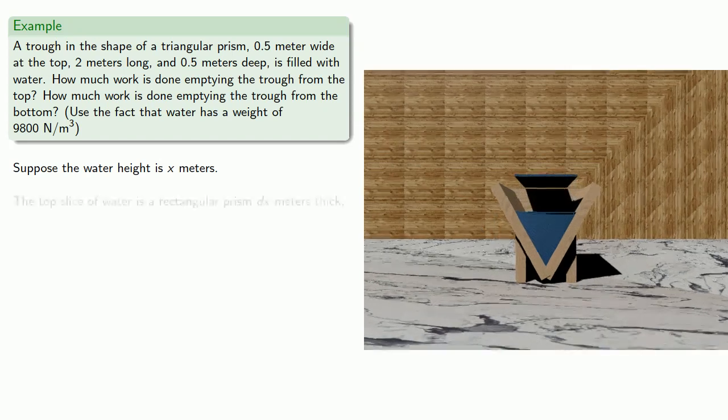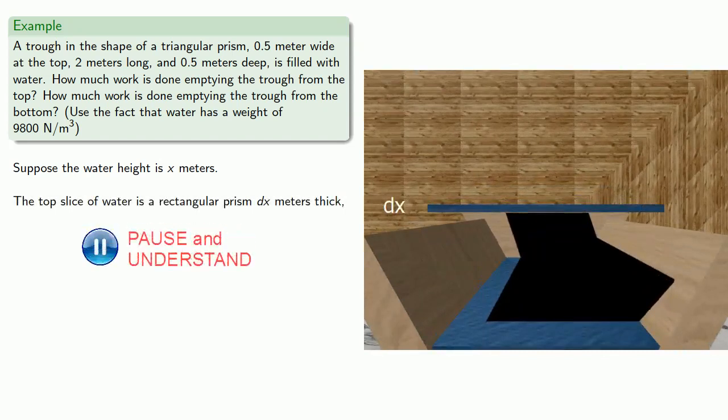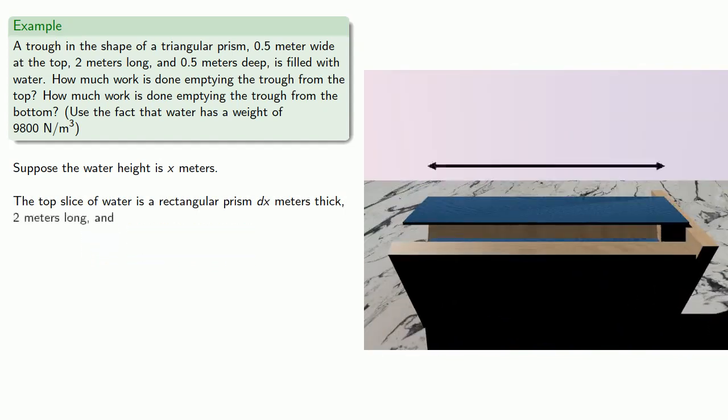The top slice of water is a rectangular prism, dx meters thick, 2 meters long. Importantly, this length does not change, so we can use the actual value of 2 meters.